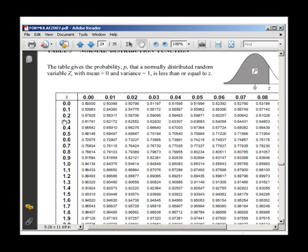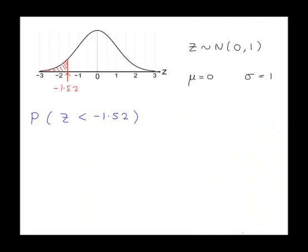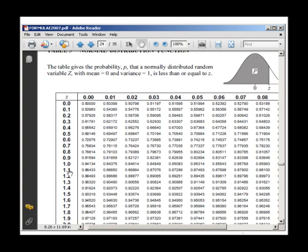Now the z values in the tables are all positive, but the z value in the question is negative. So go to the tables and look up z is equal to 1.52, ignoring the minus. There's the 1.5 and the 2. And they meet up at 0.93574.